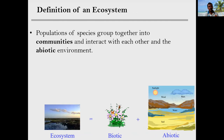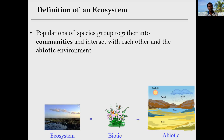So what is really an ecosystem? As you already know, it has two components — the biotic and abiotic components together. But the key difference here is that when we define ecosystem, we consider populations of species grouped into communities that interact with one another and with the abiotic environment. It's not just communities, but interacting communities — all together interacting with the abiotic environment. Simply, that is what an ecosystem is.